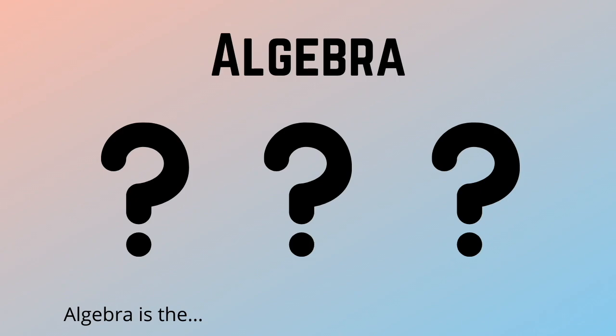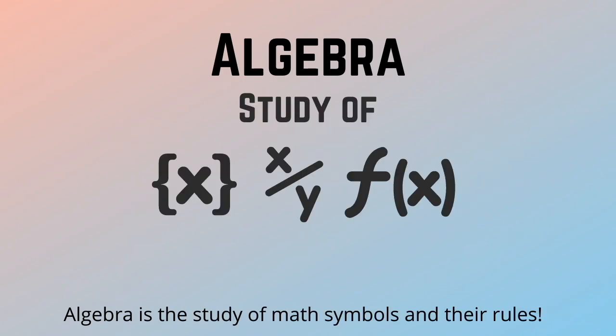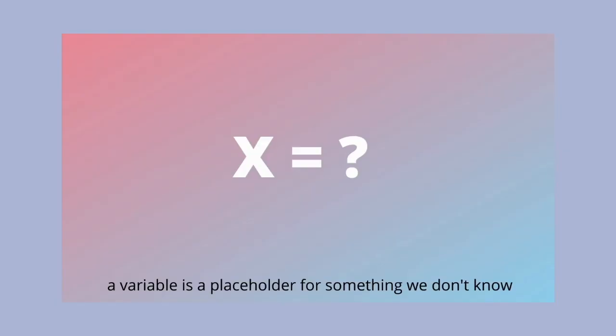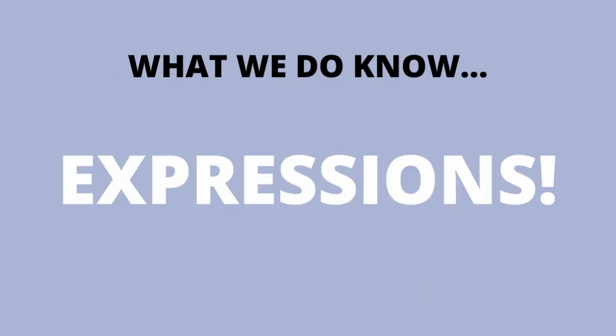Here's Algebra 1 explained in just 10 minutes. First of all, what is algebra? It is the study of mathematical symbols and variables. A variable is a placeholder for something we don't know. Variables can be called x, y, z, a, b, and we don't know what's inside.